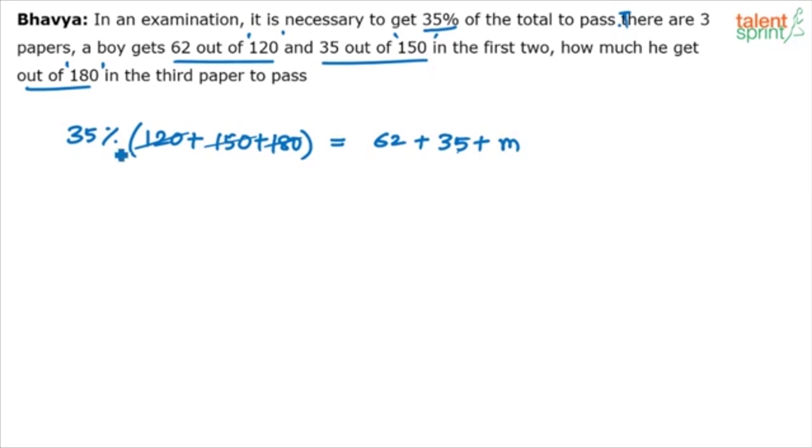So, 45 into 3 is 135 plus 22.5 is 157.5. So, what we have on the left hand side is 157.5. From these two subtract 62 and 35. It will give you M. Now, 62 and 35 is 97, right? So, 157.5 minus 97. It will give you 60.5. That's the right answer. Just one equation. One line of numbers and you'll get it. 60.5.